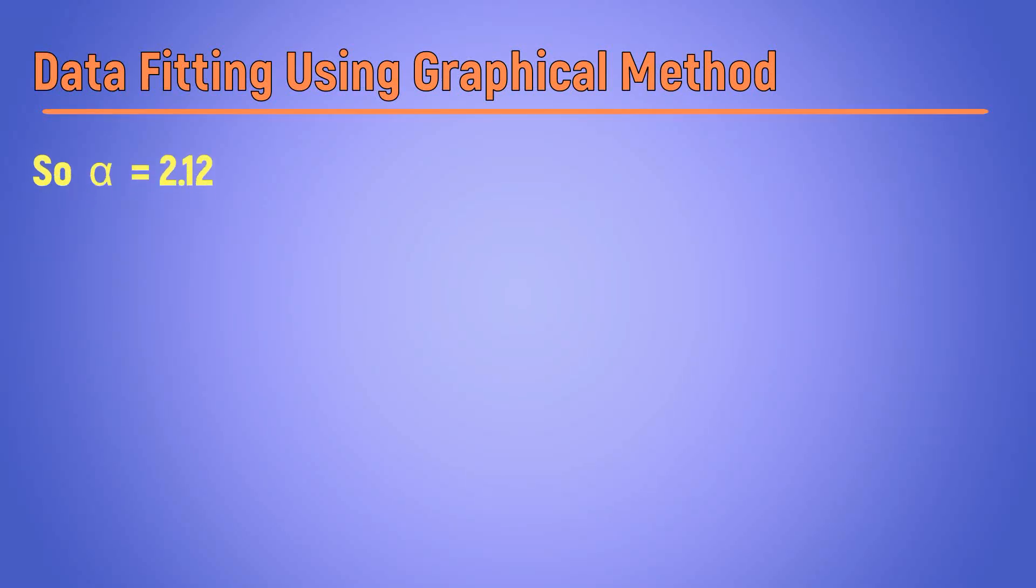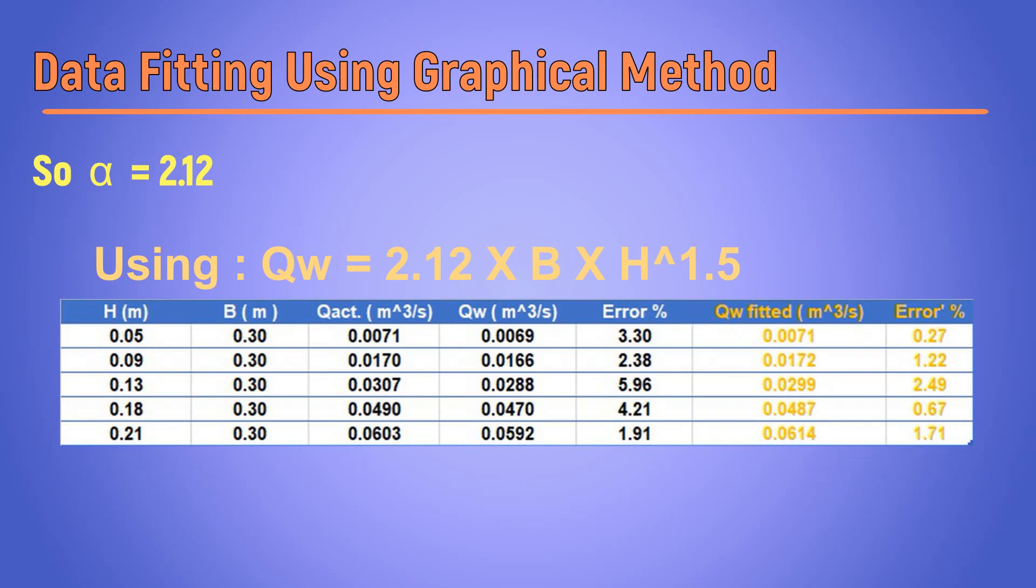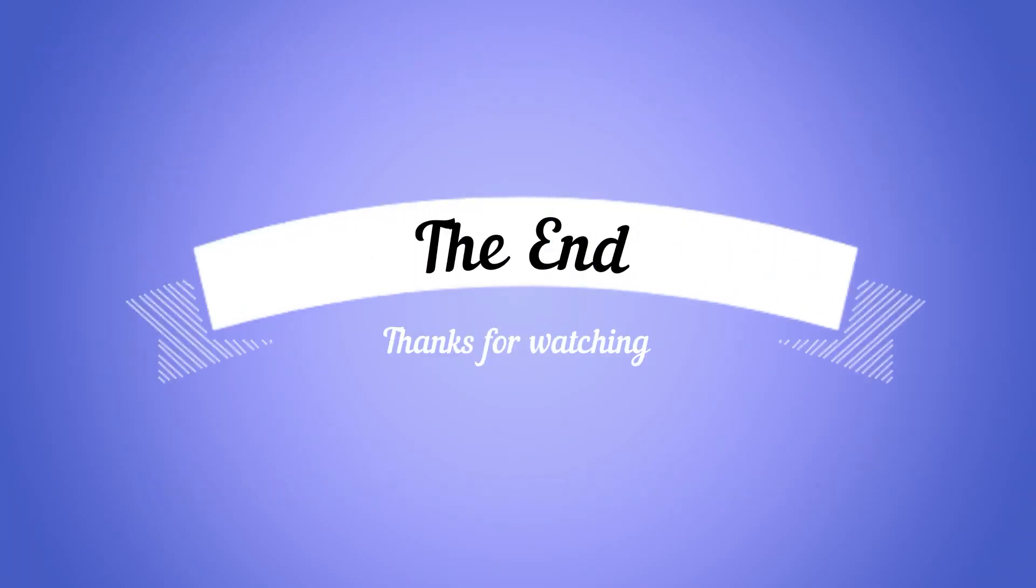So alpha will equal to 2.12. Using the weir equation with alpha equal to 2.12, you will notice that the error will be reduced. Thanks for watching and good luck.